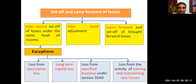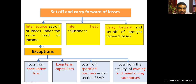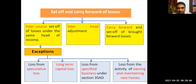To summarize so far: there are three aspects — inter-source set-off, inter-head set-off, and carry forward. Under inter-source set-off, there are four key exceptions: loss from speculative business, long-term capital loss, loss of specified business, and loss from owning and maintaining race horses. Keep these four exceptions in mind.